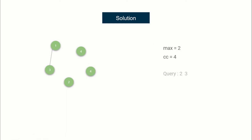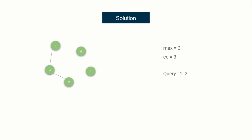For the next query, two and three: we check whether these two are connected - they are not in the same set - so we merge them, CC decreases by one, and since the newly created connected component has size three, which is greater than the previous max of two, max becomes three. Now suppose the query is one and two, which are already part of the same set. In that case, we don't merge them, CC doesn't change, max doesn't change, and we directly print the current values.